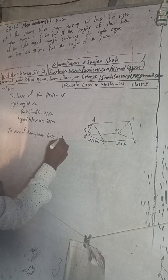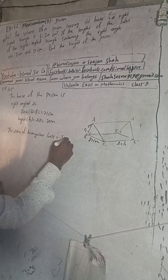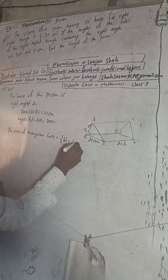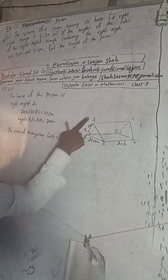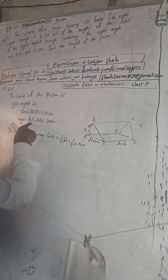So area of triangular base means what? Half base into height, because it is right angle. Half base into height: 1 by 2, base - what is base? Base BC is 21, into height which is 20.